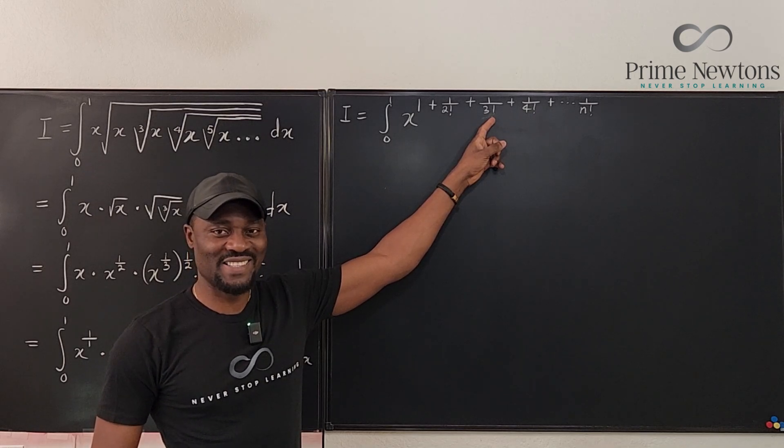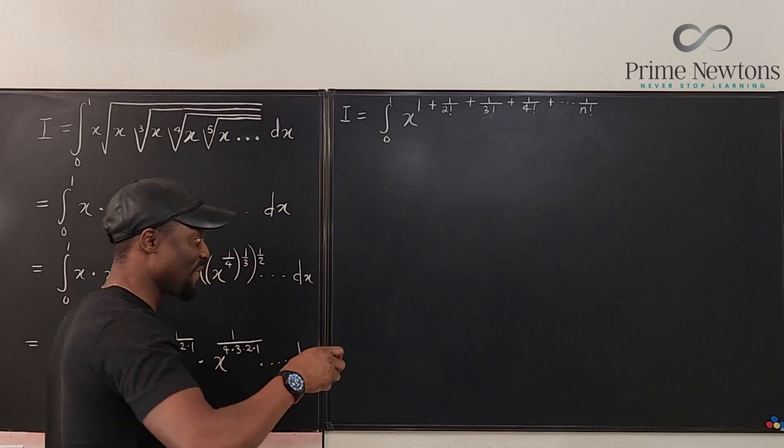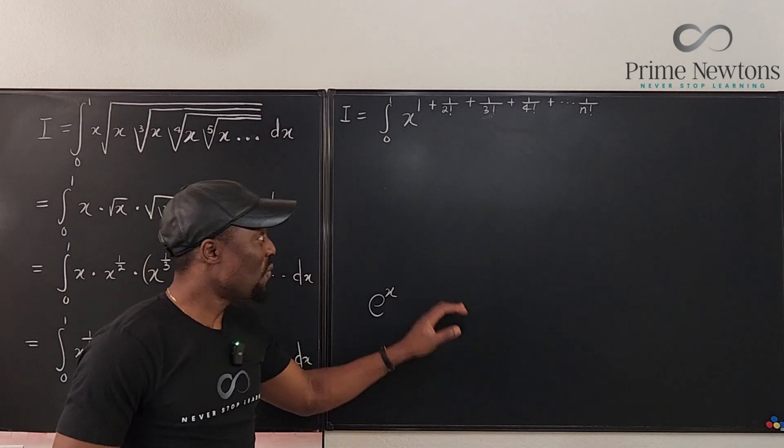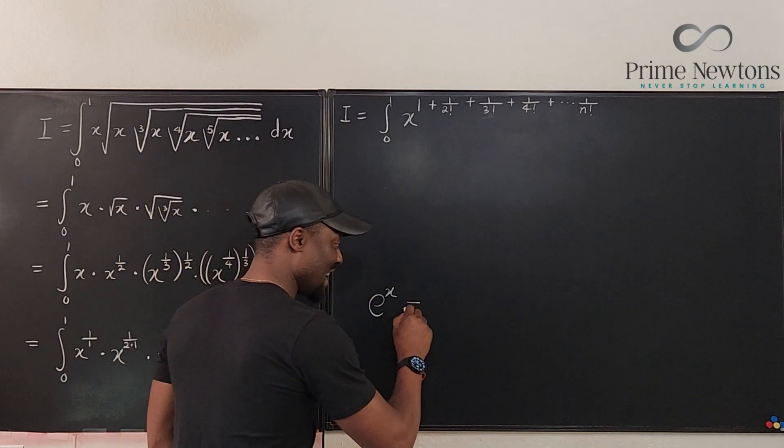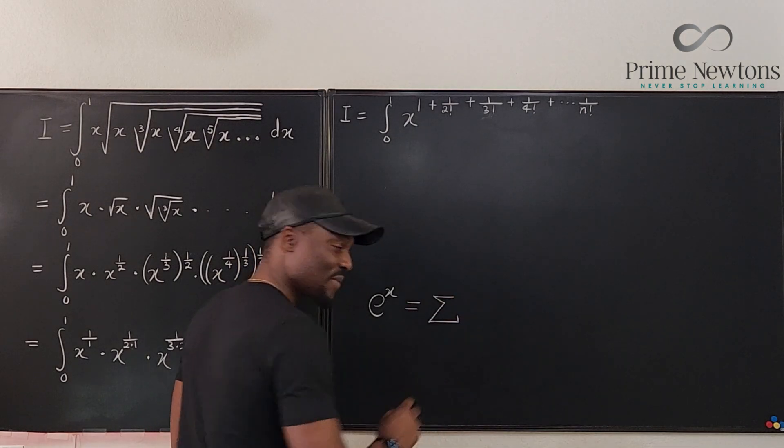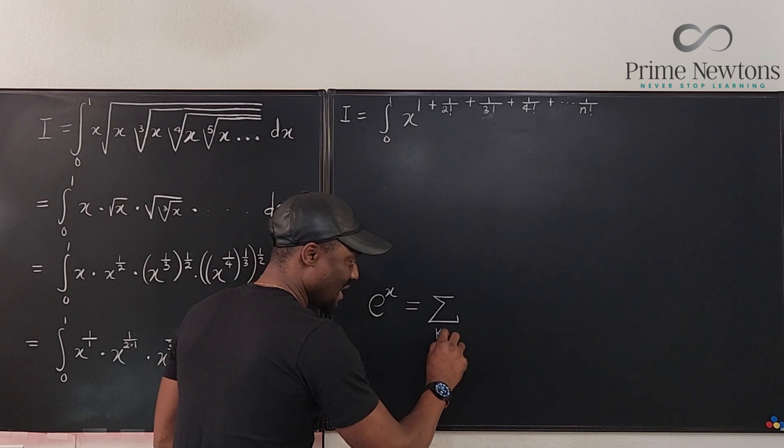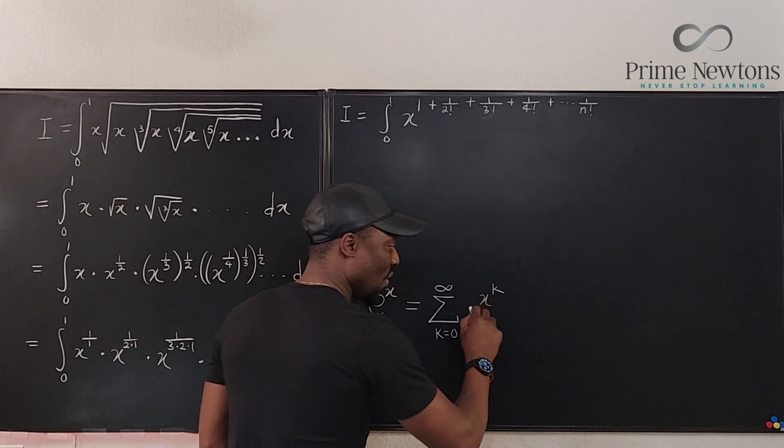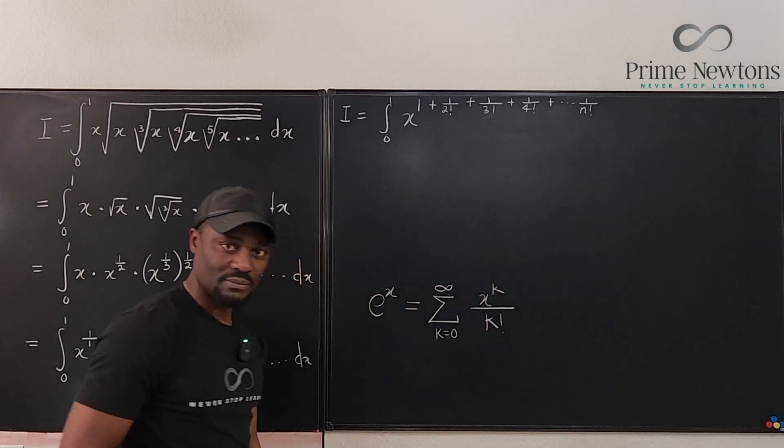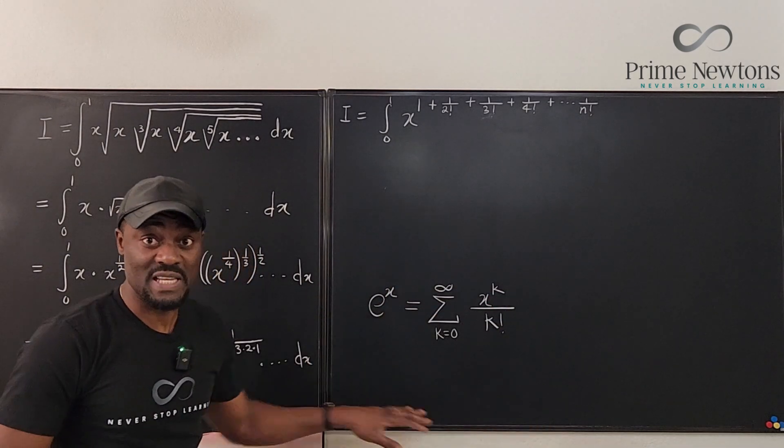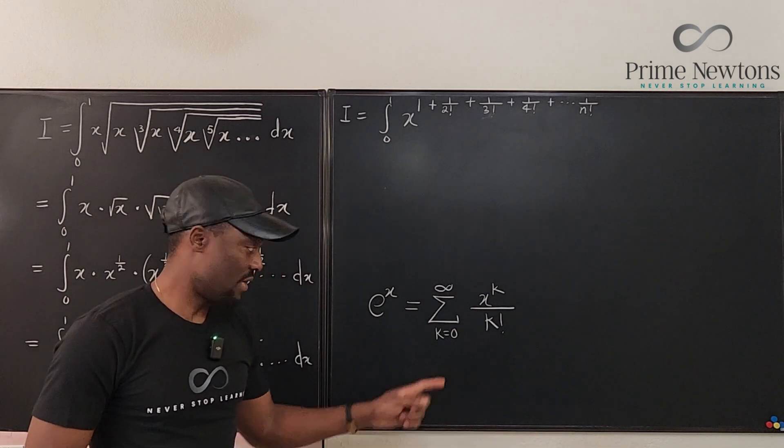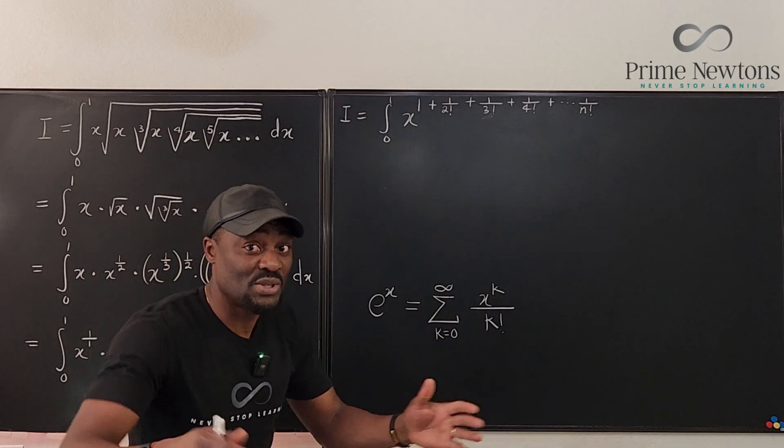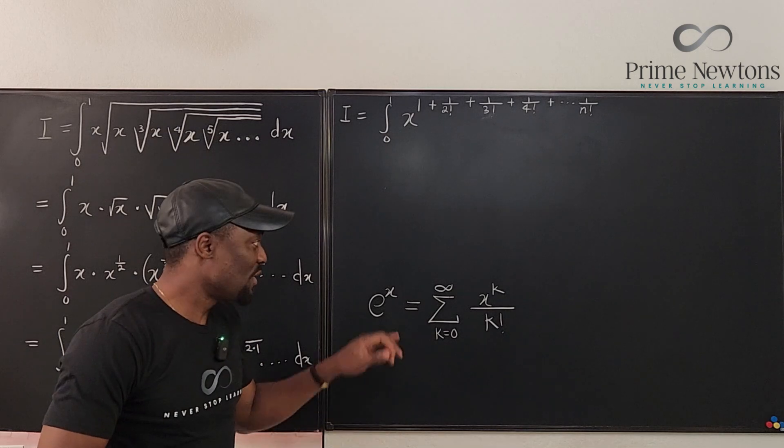But we know something that looks like this. You see this guy, e to the x has several different ways of expressing it. One way that's similar to what we have here is that e to the x is equal to the sum from k equals zero to infinity of x raised to power k over k factorial. This is the definition of e when you're using infinite series definition for it. It starts from zero and then you go all the way to infinity. So how does this relate to this?